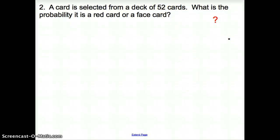Next example. A card is selected from a deck of 52 cards. What is the probability that it is a red card or a face card? Well, are there red cards that are face cards? Yes, there is. So since there is, it is not mutually exclusive.